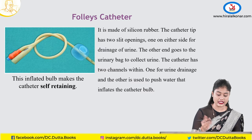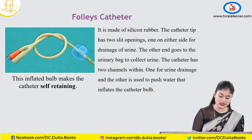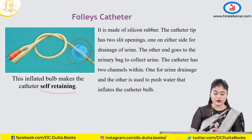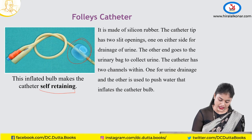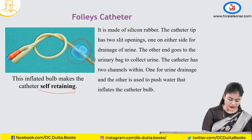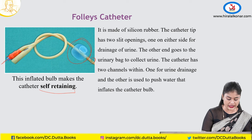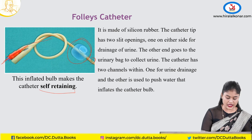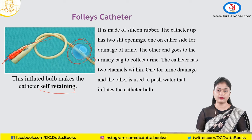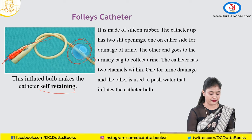Coming to Foley's catheter. As mentioned, Foley's is self-retaining. You can see an inflated bulb on the instrument. Just like the rubber catheter, there is a slit at the tip to drain the bladder. At the other end there are two openings — two channels running through. When you inflate distilled water through one channel, the bulb gets inflated and the Foley's is retained inside the bladder, making it self-retaining.